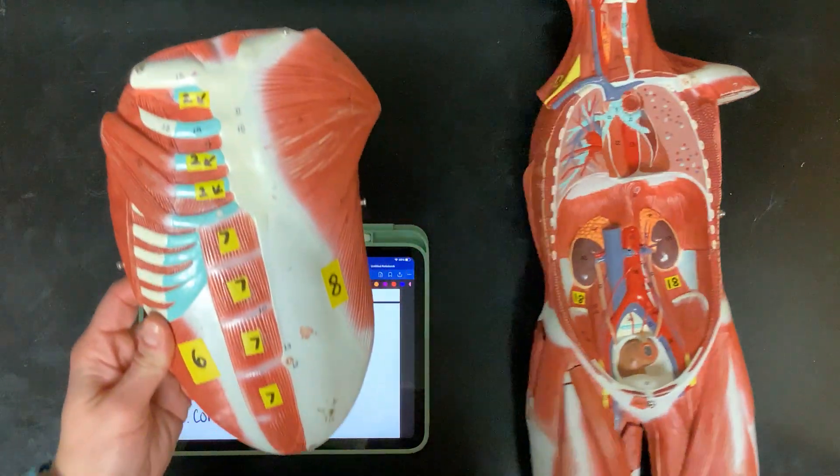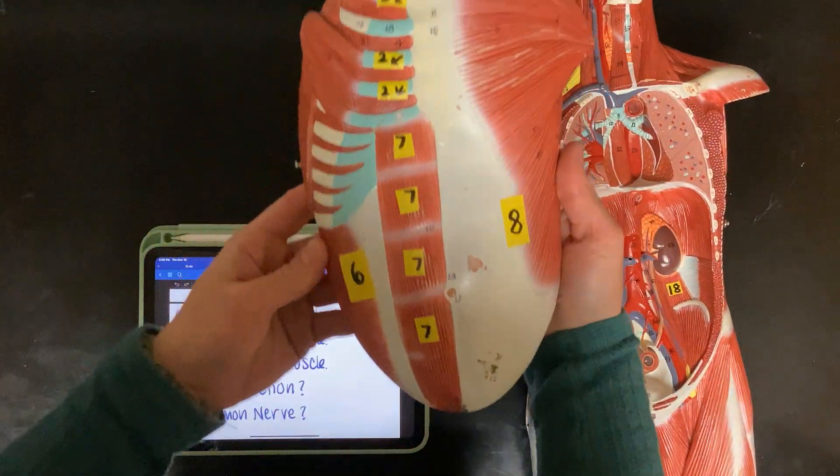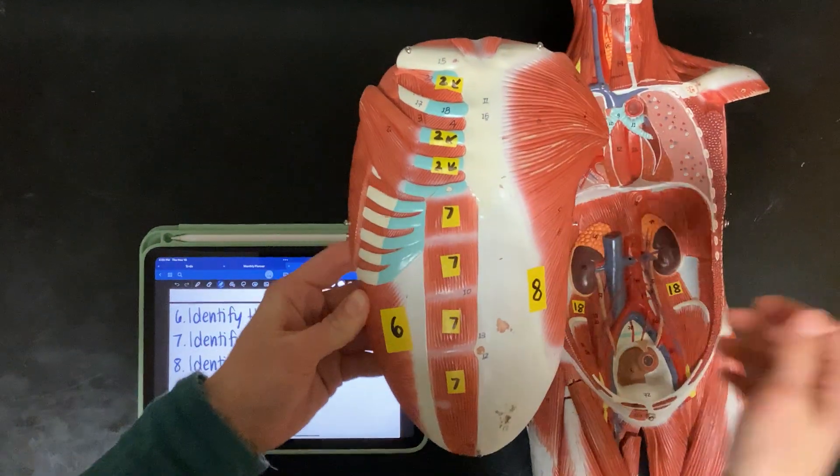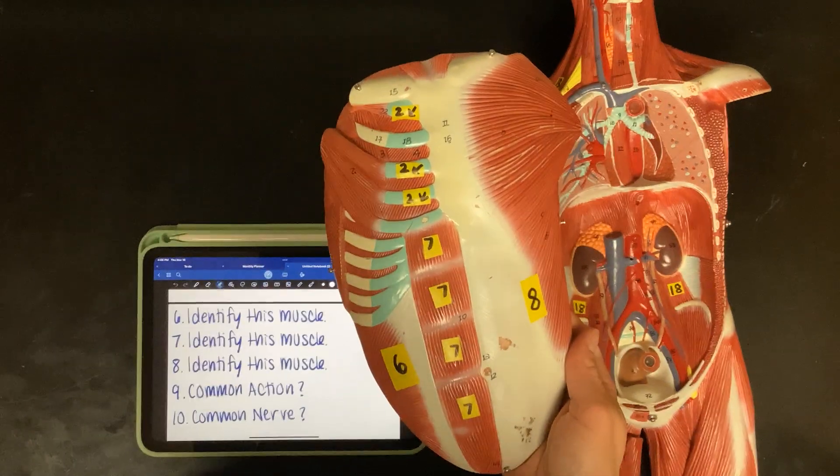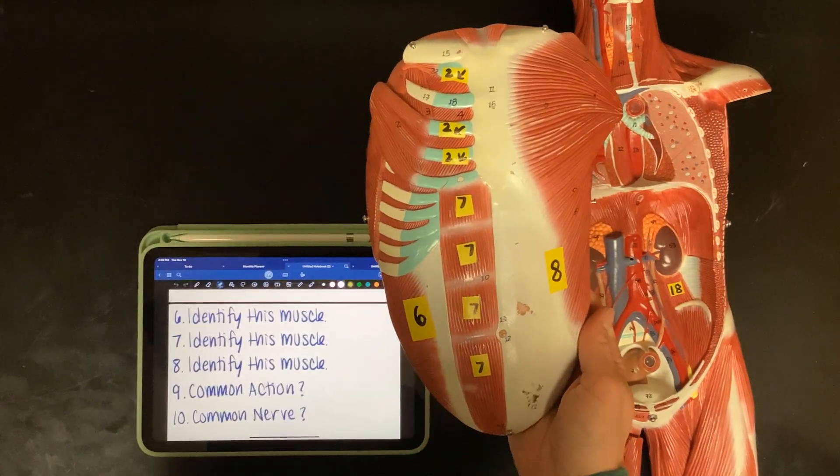Number six, seven, and eight are all on this model here. Nine, common action. Ten, common nerve.